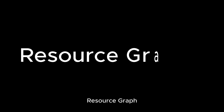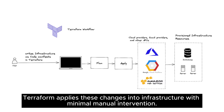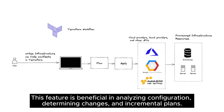Resource Graph: Terraform generates a resource map and updates non-dependent resources simultaneously to ensure deep insight into your infrastructure. Complex Change Automation: Terraform applies changes to infrastructure with minimal manual intervention. This feature is beneficial in analyzing configuration, determining changes, and incremental plans.